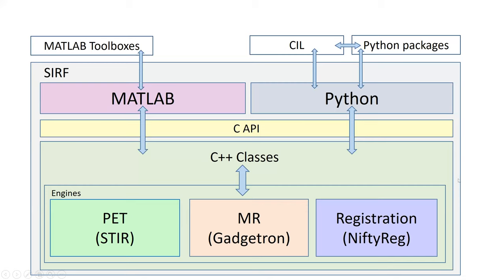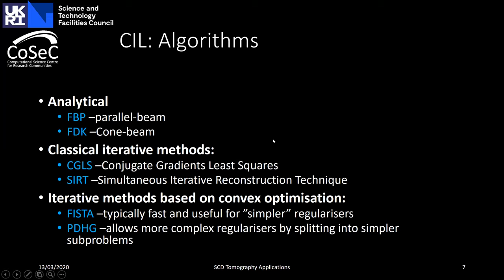The Python objects are fully compatible with SIRF objects. We have a number of algorithms to solve minimization problems. It's an incomplete list, but we have classical iterative methods: CGLS, SIRT, gradient descent, FISTA, and PDHG. In this virtual hackathon, we would like to develop a stochastic version of PDHG.